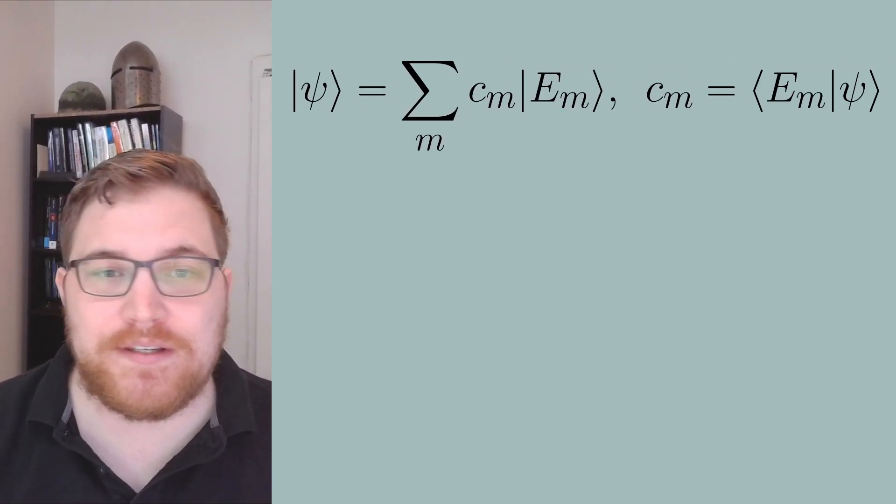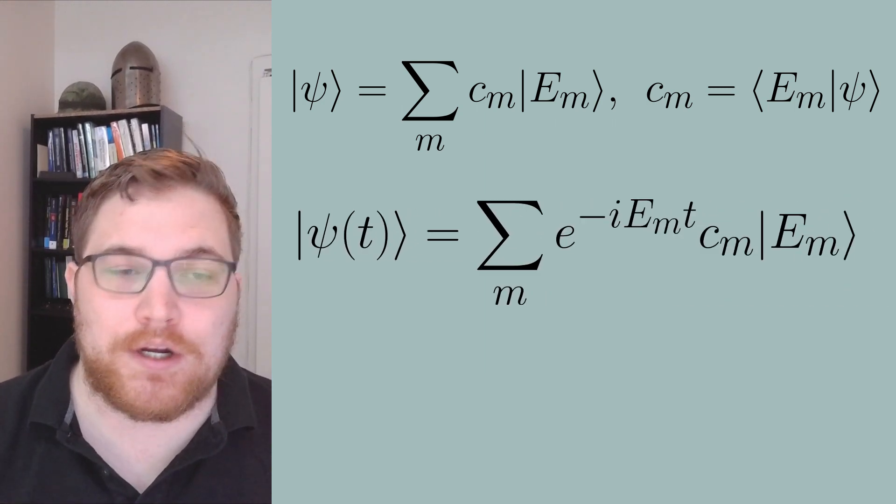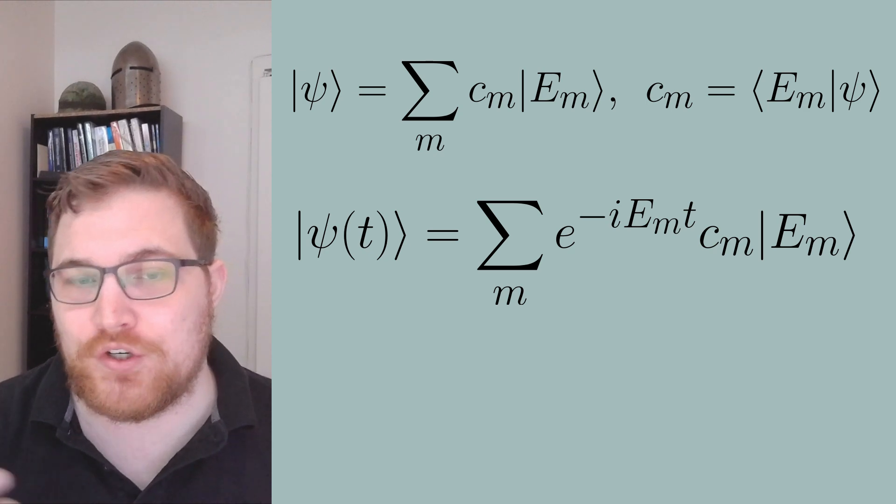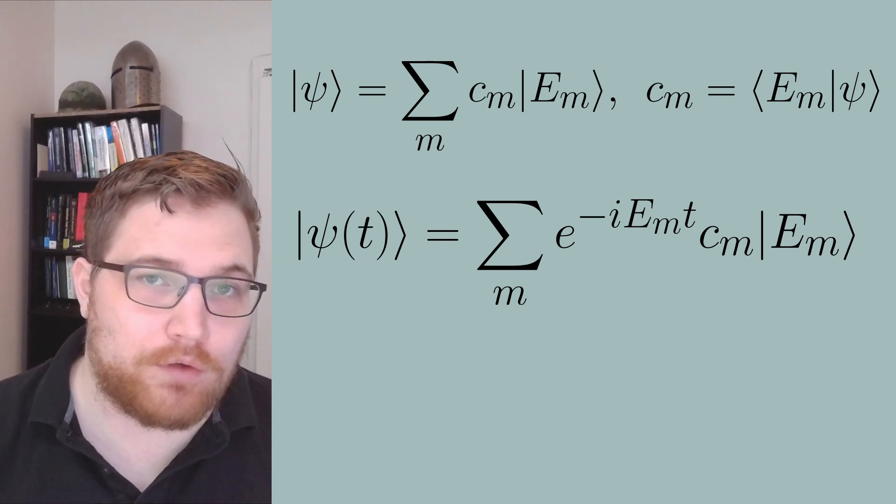From here, as usual, the time evolution is easy. Solving the Schrodinger equation, as we've done in the past so many times, we get the following generic equation to evolve our pure state.